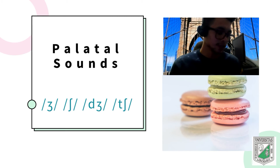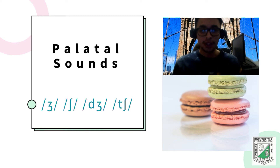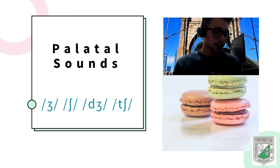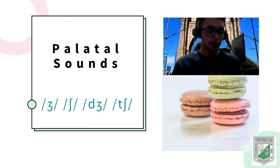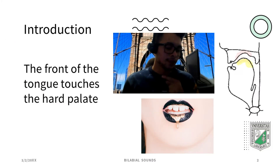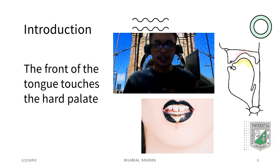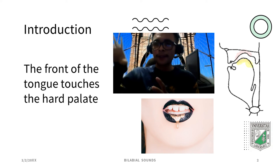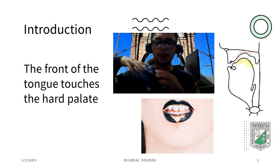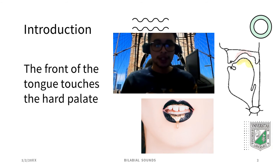We're going to talk about palatal sounds. Basically, those are the sounds or consonants that we can produce by using the front part of the tongue. With that part, we can touch the hard palate — so those are the sounds that we produce when we touch the hard palate with the top part of our tongue.